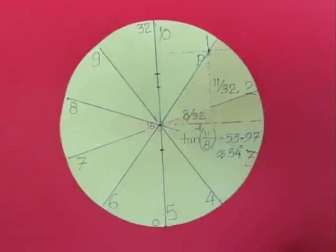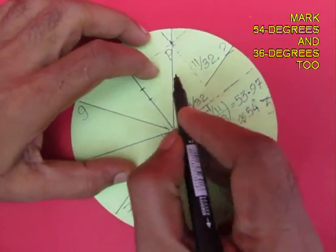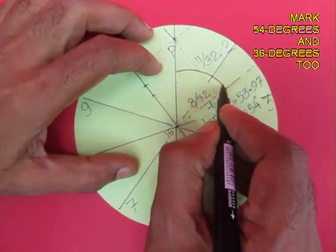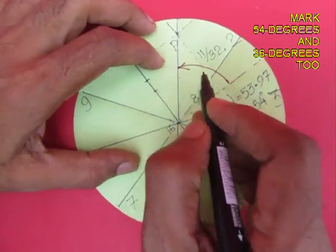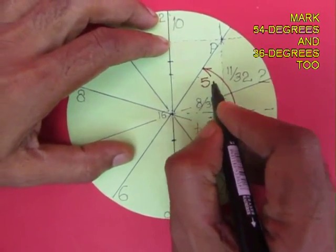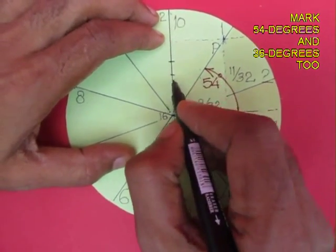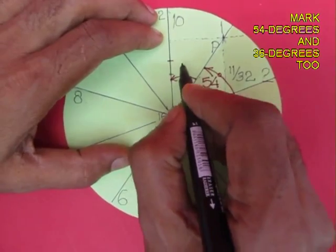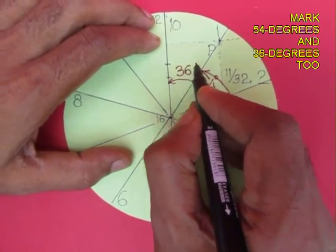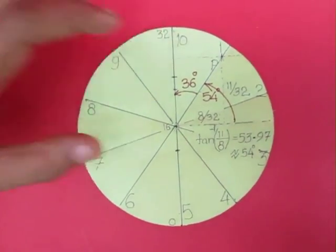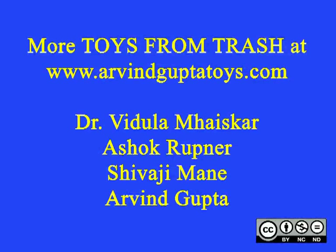Now we are going to just mark what was 54 degrees. Angle P to the center and the right side is 54 degrees, and its complementary angle is 36 degrees. Have fun dividing a circle into 10 equal sectors.